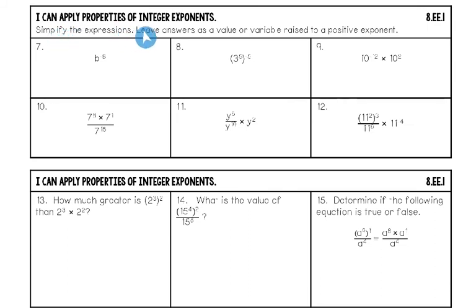The next section applies properties of integer exponents — same rules as before, but now we add negative exponents. We use the 'apartment' analogy: every base is on either the top or bottom floor. Number seven: B starts on the top floor, but B is not happy because its exponent is negative. So B has to move to the bottom floor, and we put a one on top. Now the exponent is positive and B is happy. Final answer: one over B to the eighth power.